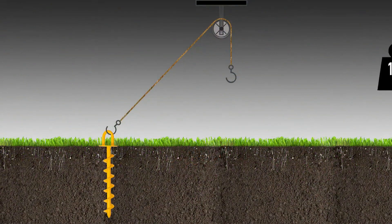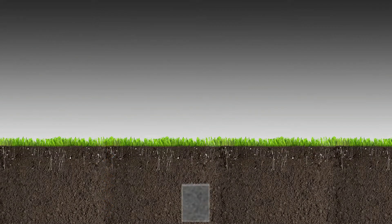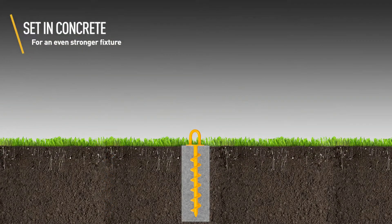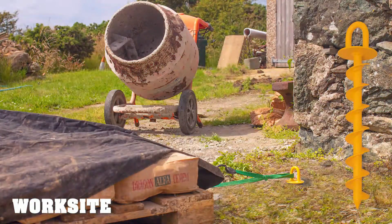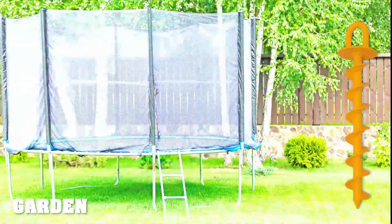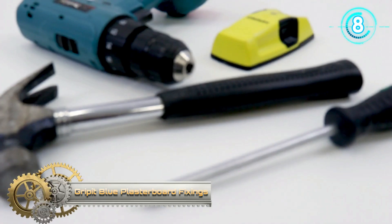340 millimeters in length and load tested to 160 kilograms. Multiple anchors can be used for a stronger fixture or set in concrete for the ultimate hold. Grip it blue plasterboard fixings.